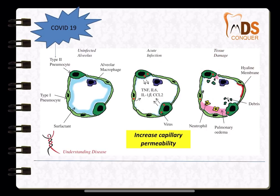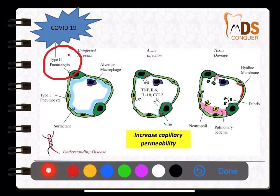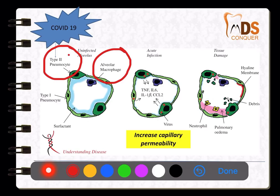COVID-19 affects the type 2 pneumocytes and damages them. Once they get damaged, the cells release inflammatory mediators which activate the alveolar macrophages. These activated alveolar macrophages release cytokines, especially tumor necrosis factor alpha, interleukin-1 and interleukin-6. Once these are released, the capillaries present around the alveoli undergo endothelial contraction and retraction, finally causing vasodilation, which leads to increased capillary permeability. Once capillary permeability increases, fluid from the capillaries enters the interstitial space, and from the interstitial space the fluid can enter the alveoli, resulting in pulmonary edema.